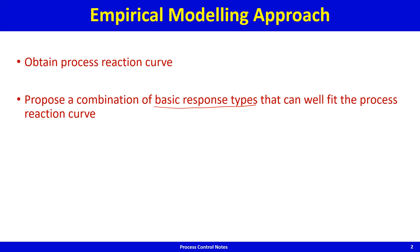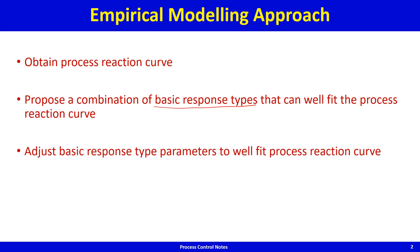Once we propose an appropriate combination of basic response types, the next step is to adjust their parameters. Each basic response type has parameters — for example, a gain has a magnitude, a lag has a time constant, and a pure delay has a dead time. We need to adjust these parameters to fit the process reaction curve as well as possible.